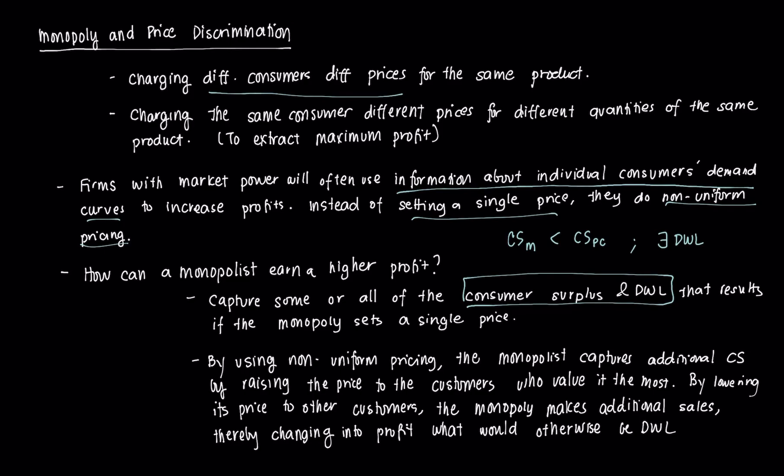By using non-uniform pricing, the monopolist can capture additional consumer surplus. It does this by raising the price to consumers who value the good the most, so those who can afford the good will be made to pay more. And it can lower its price to consumers who may not be able to afford that single price before. The monopoly can make additional sales which can thereby change into profit and would otherwise have been deadweight loss.